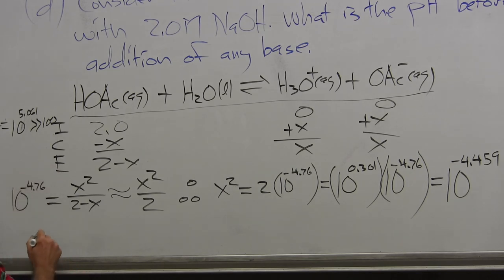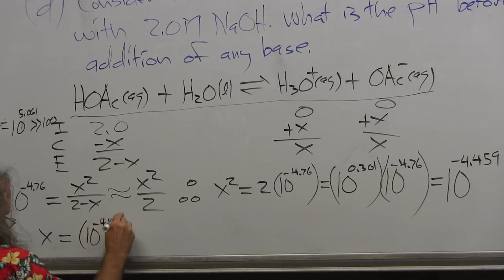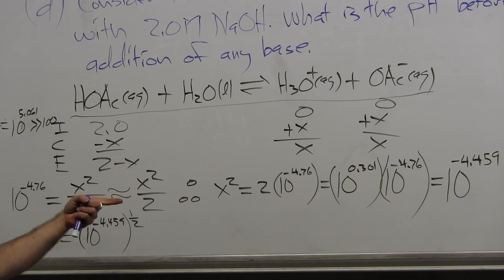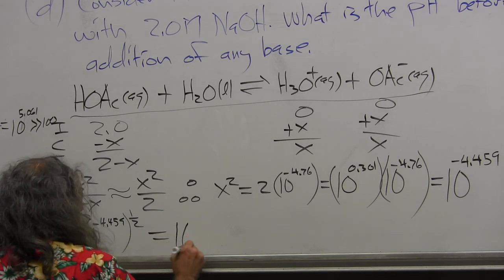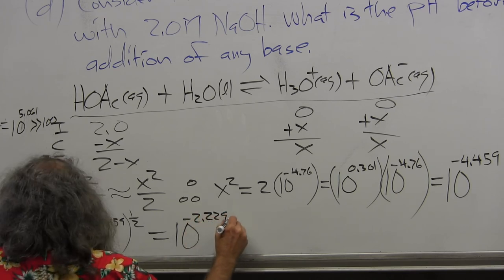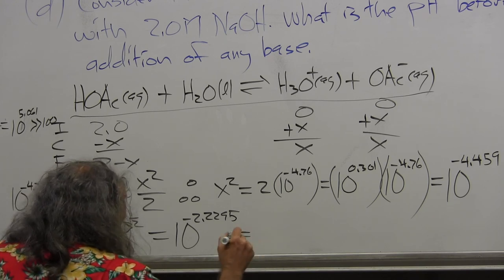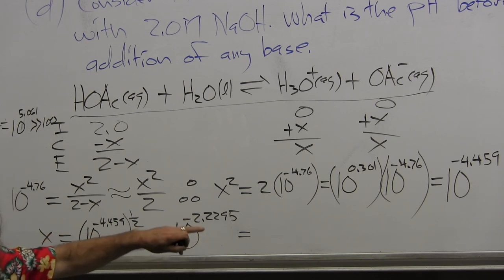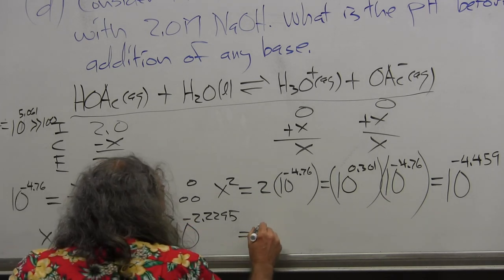So now, that means that X is equal to 10 to the minus 4.459 to the power of one-half. And the advantage is, since we got everything up there in the exponents, we can use the rules of exponents. Finding the square root is a simple matter of dividing by 2. So on a piece of scratch paper, 2 goes into 4.459, 2.2295, which is way further than I need to go. That means this is equal to 10 to the minus 2.2295. That's equal to my hydronium ion concentration.